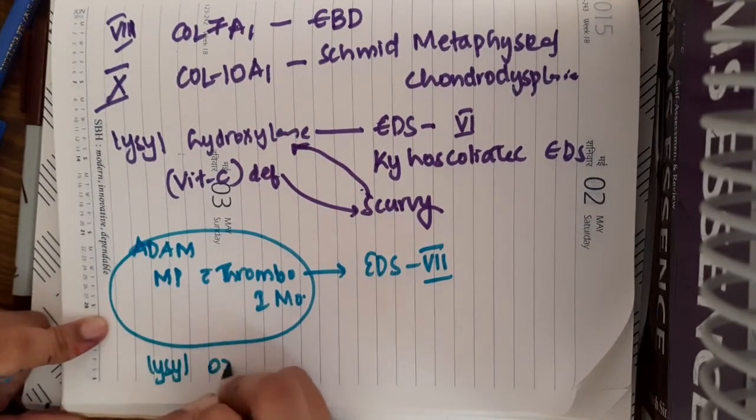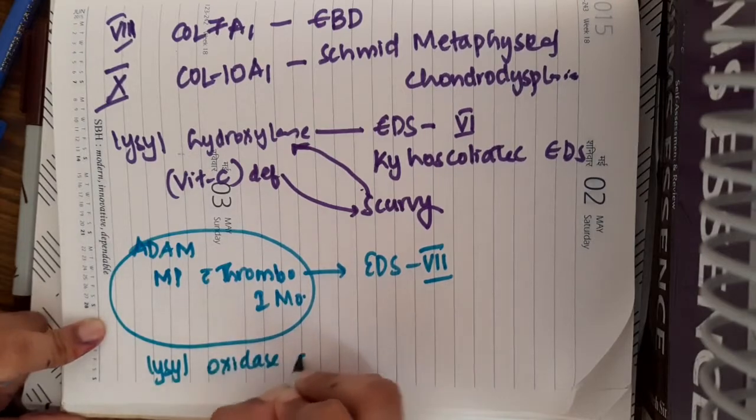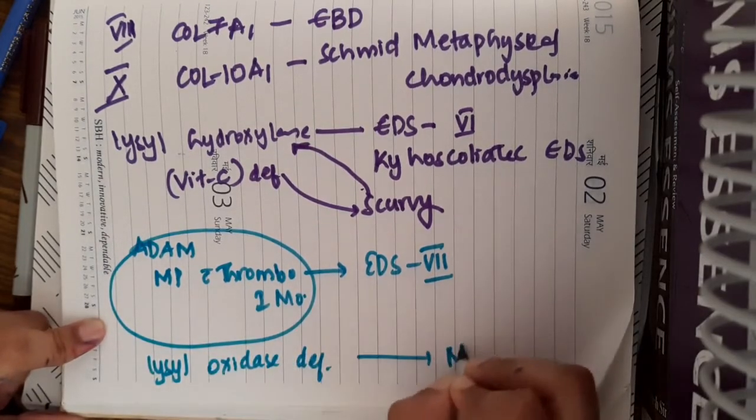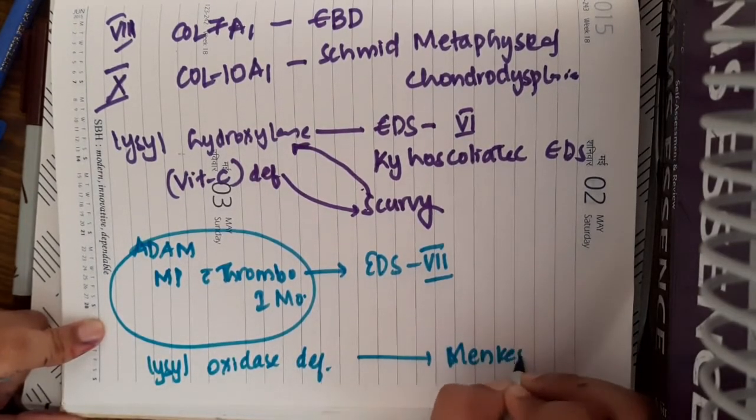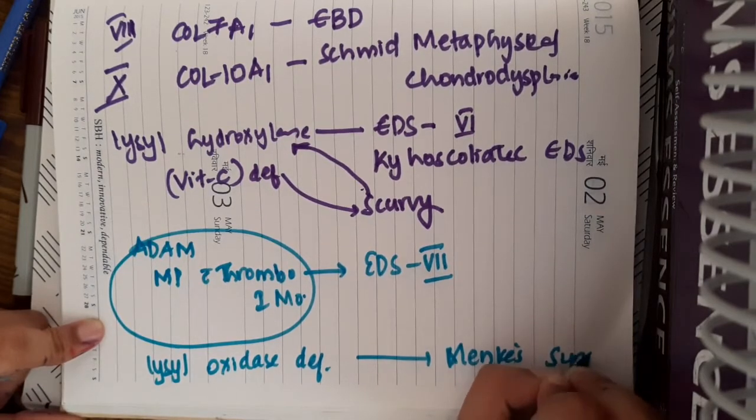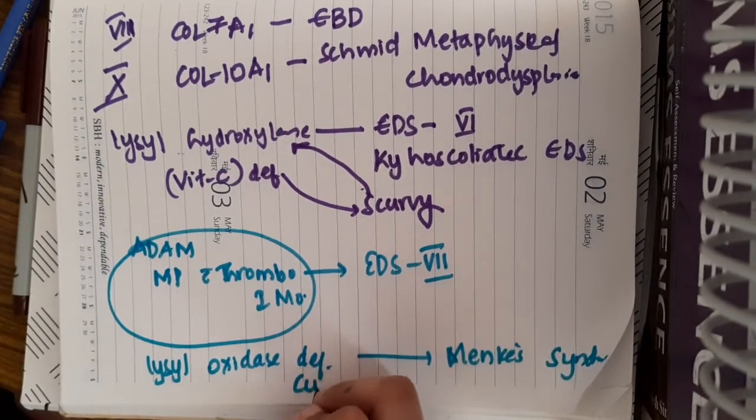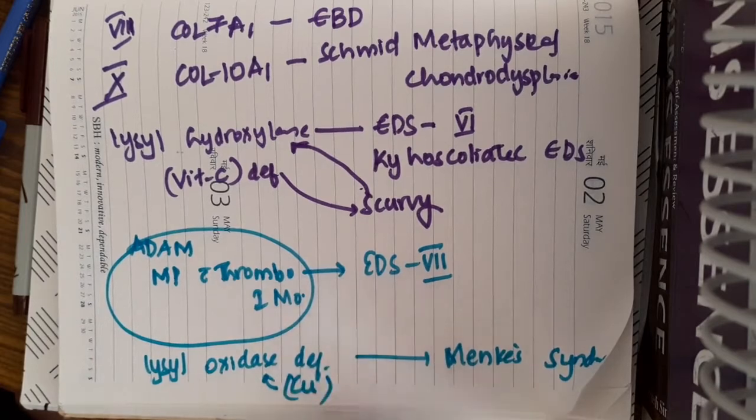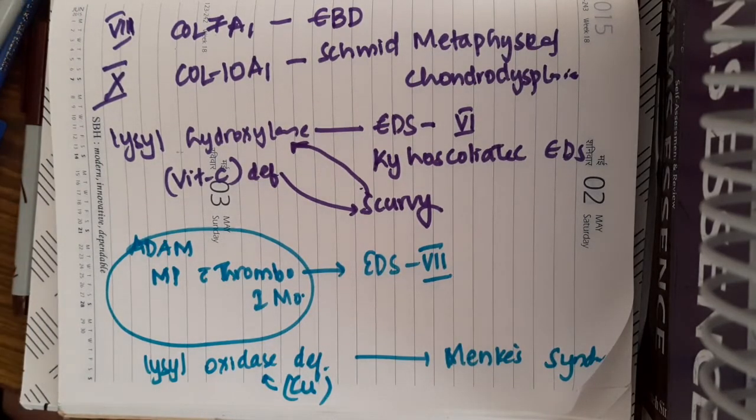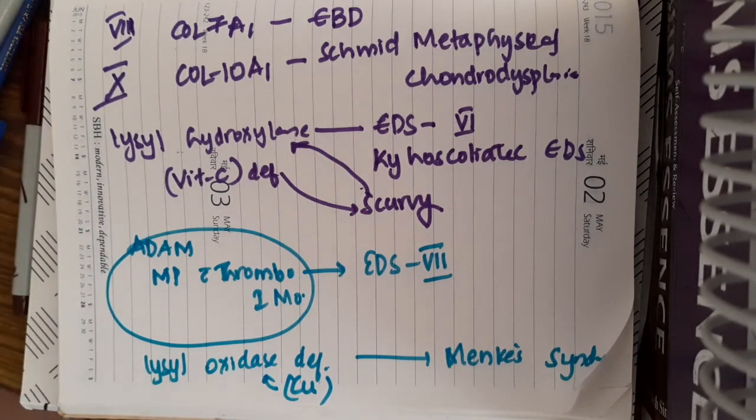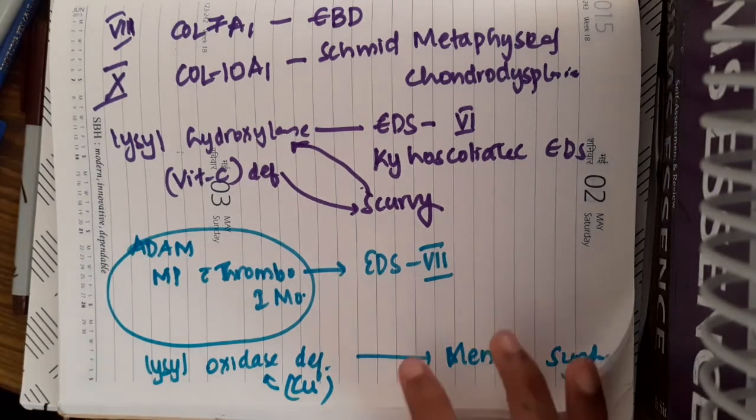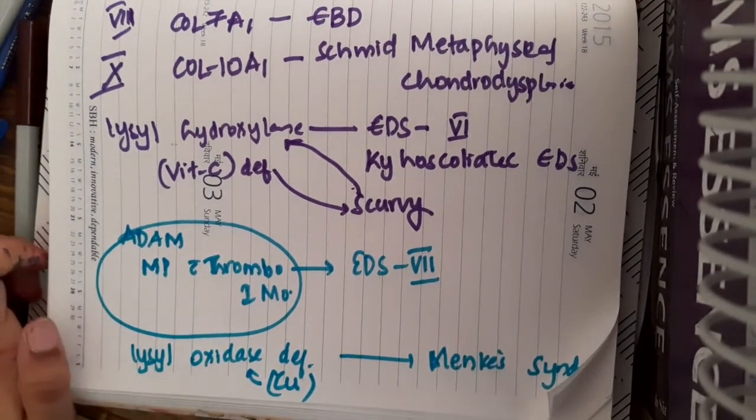Defect in lysyl oxidase deficiency results in Menkes syndrome. This Menkes syndrome can also occur due to the deficiency of copper, because lysyl oxidase requires copper as the cofactor. So this is about the collagen, its synthesis and diseases. Thank you guys for watching my lecture. Thank you.